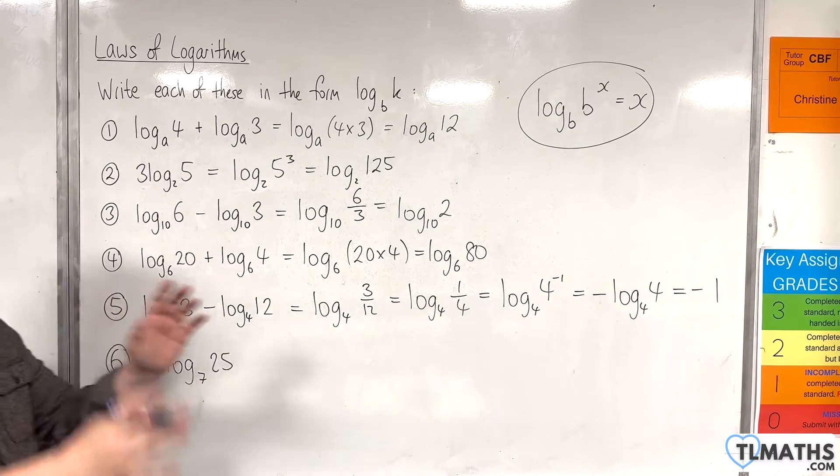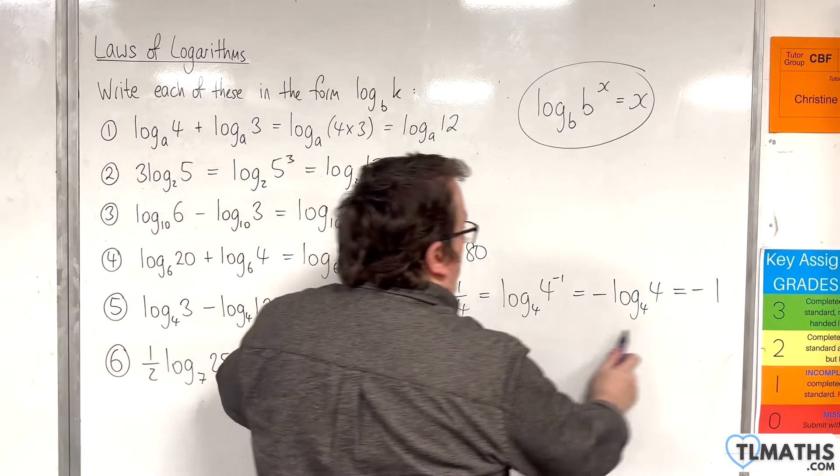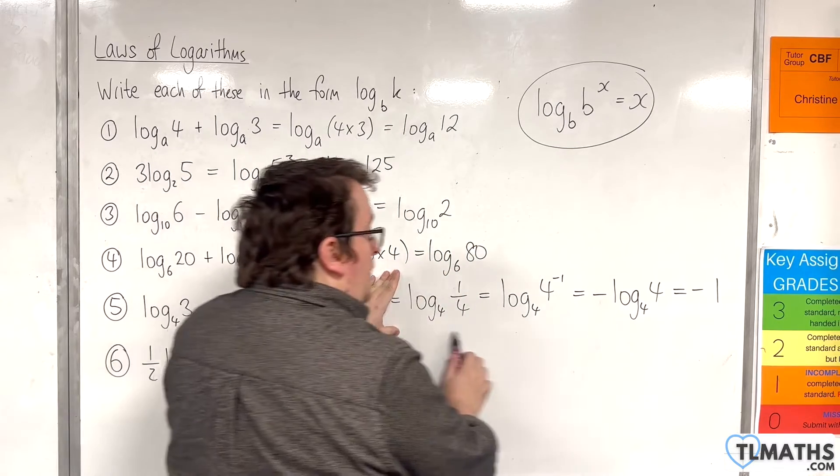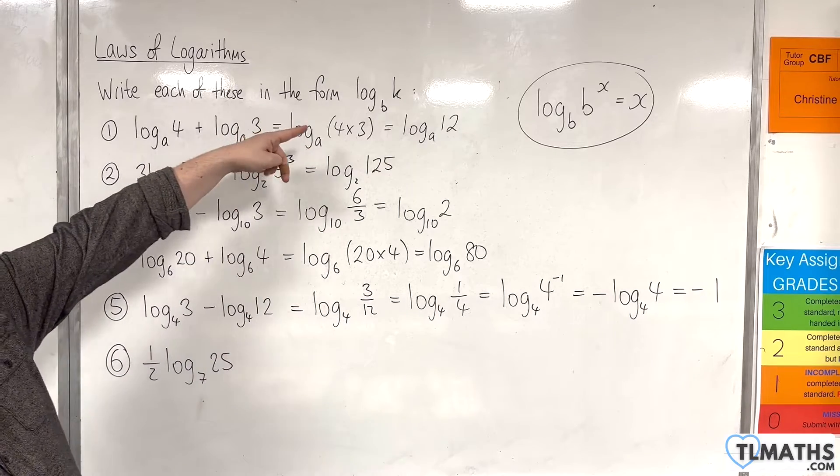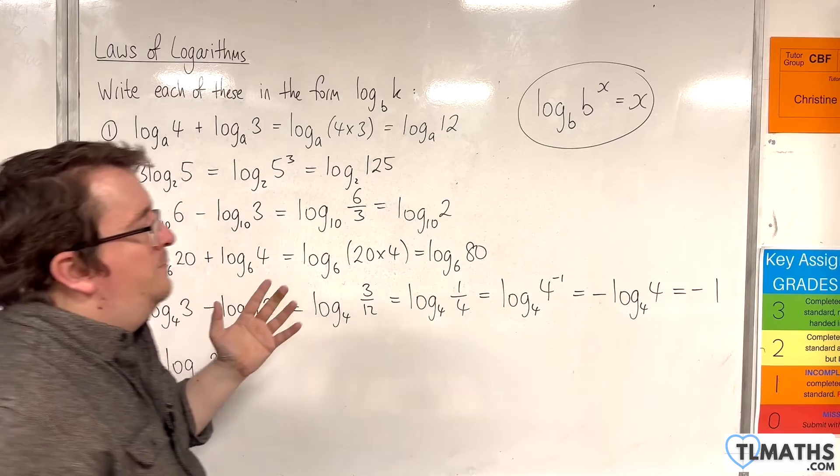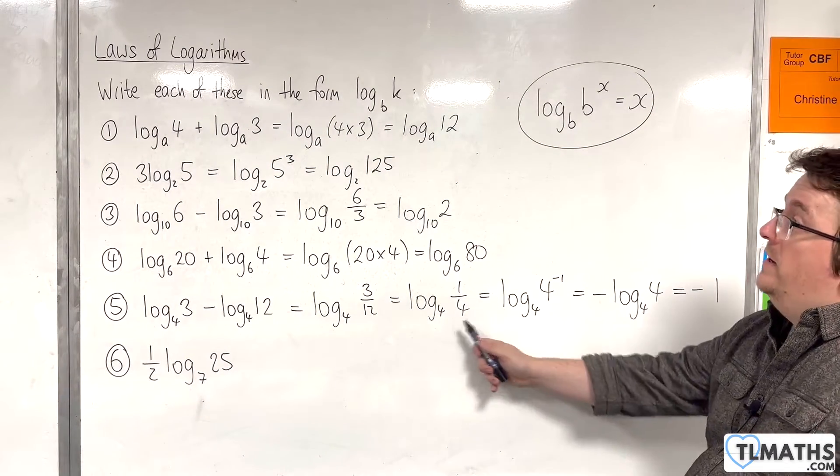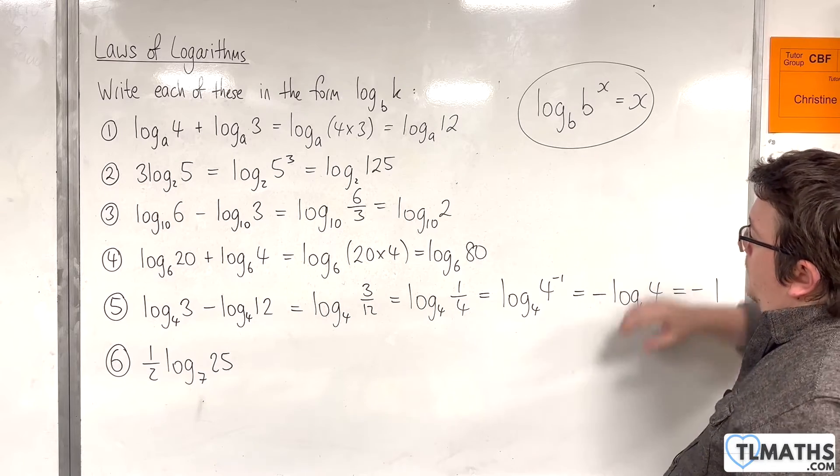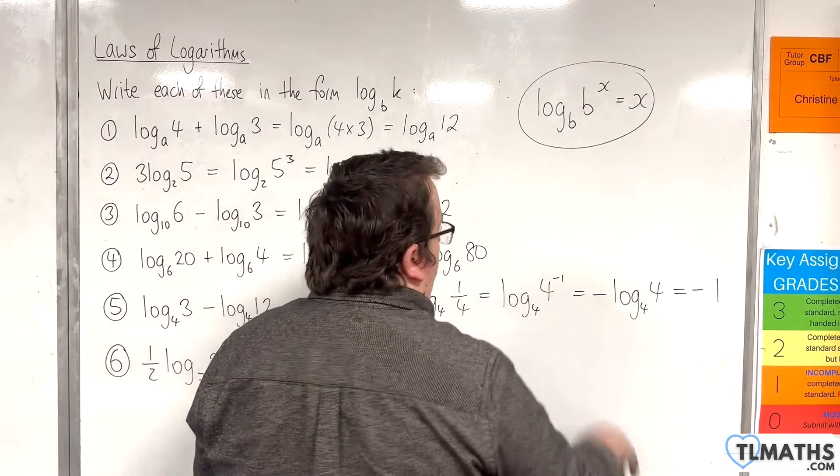So this manipulation here is very important. And it's very important that you understand how that worked. Now of course it's not in the form of log base b of k anymore. I understand that. But either of those two forms will be fine. This is just extra. But you should be able to get that through to minus 1.